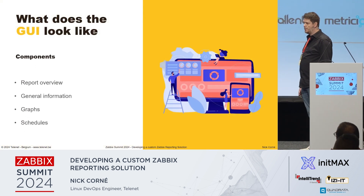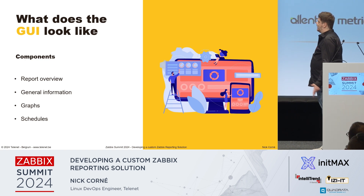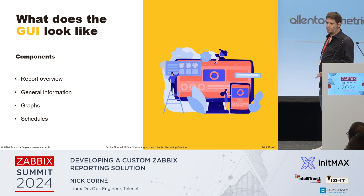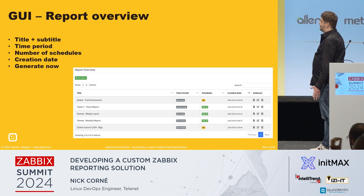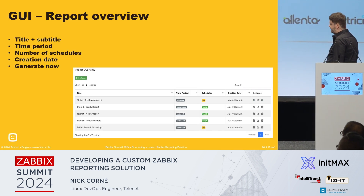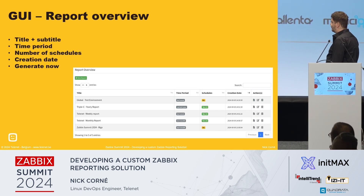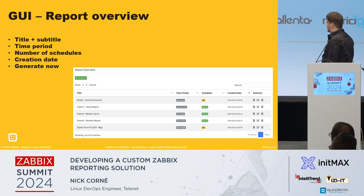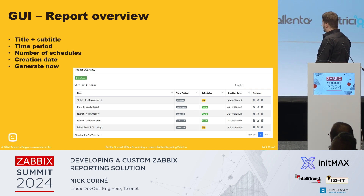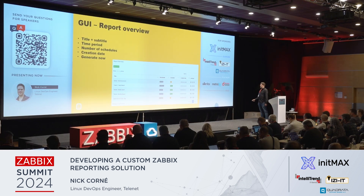So those were the key requirements. But how does the GUI look? That was also very important. We have a few components. The first is the report overview — here you have an overview of all your reports: the title, for which periods the report will generate, any schedules, when it was created. And you have a few actions: you can edit, delete, and you can also render your report on the fly.